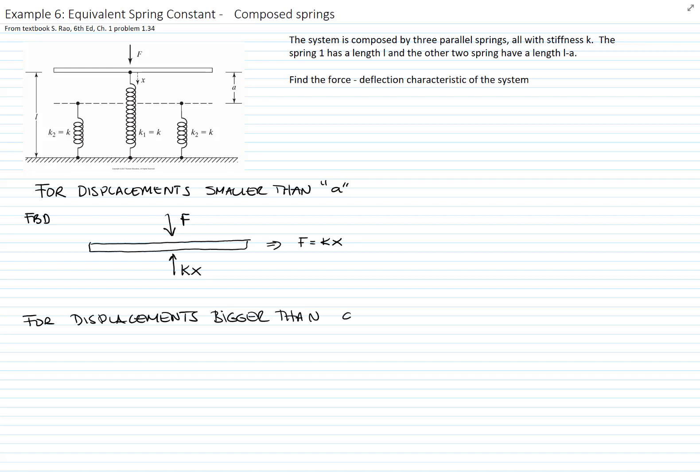We will do our free body diagram of this situation where the displacements are bigger than a. Then we have our force F, and we have the longer spring that creates a force k times x.